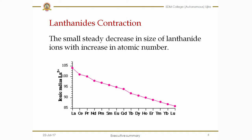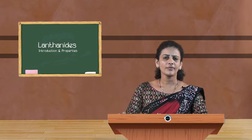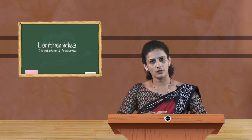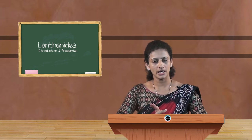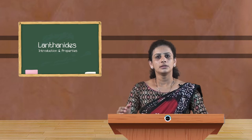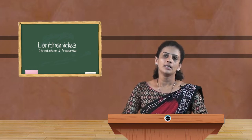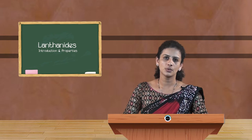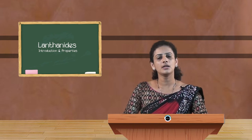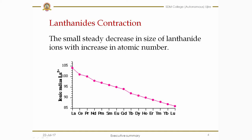Let us discuss the properties of lanthanides. The first property is atomic radii. As with d-block elements, the atomic radii of lanthanides also decrease with increasing atomic number. But here the decrease is very small and steady — this small and steady decrease in the size of lanthanides with increasing atomic number is called lanthanide contraction.